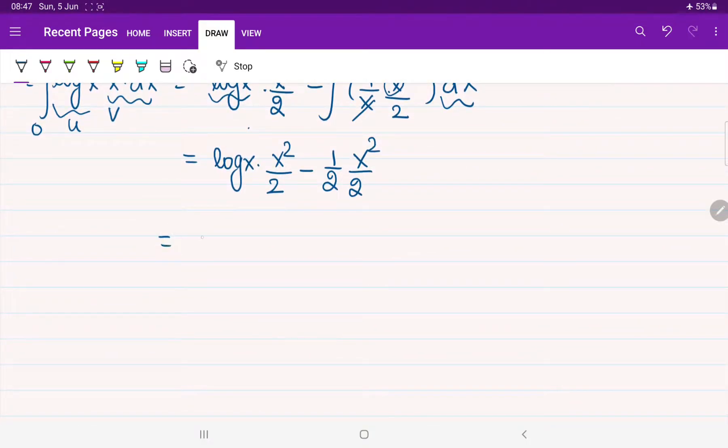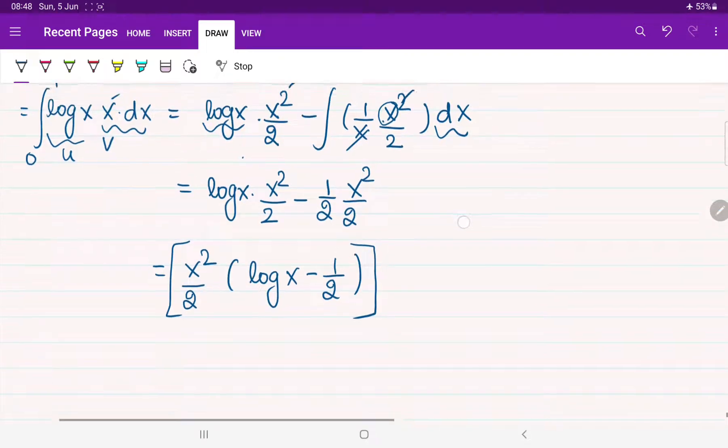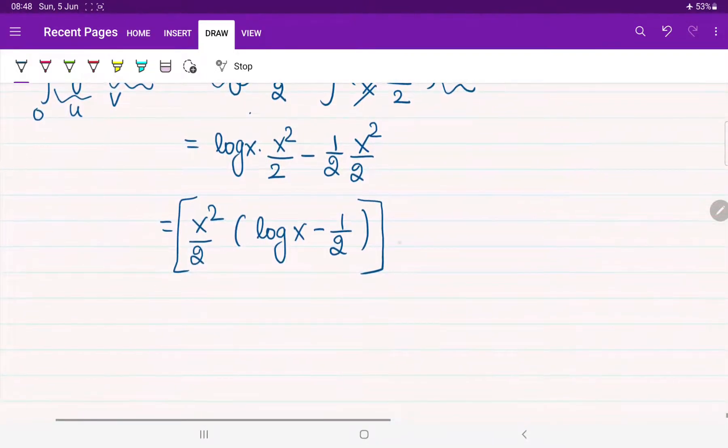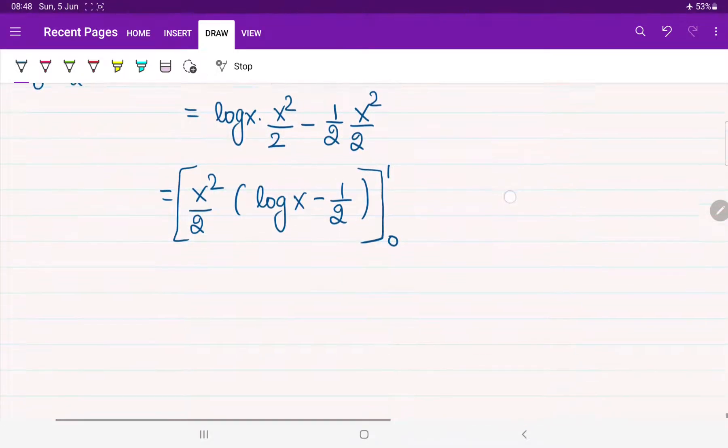Finally, how can we write this further? You can observe it clearly, x square by 2 is common for this, and I can write x square by 2 log x minus 1 by 2, that will be the resultant answer. After completing this whole thing, just substitute the limit. To avoid the confusion, I haven't put limit anywhere. Limit is 0 to 1.